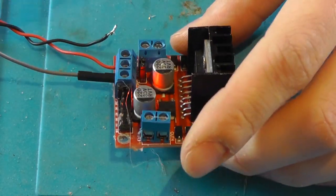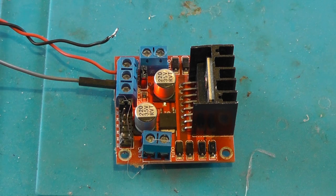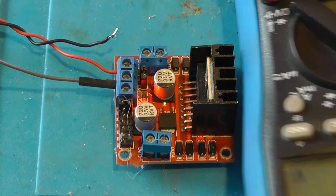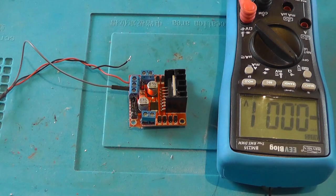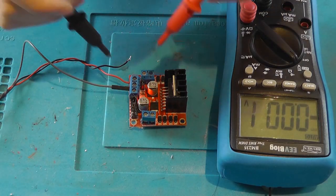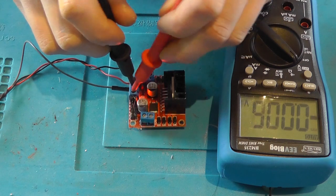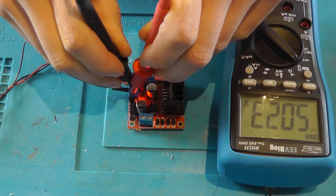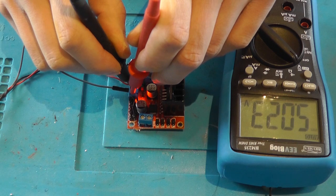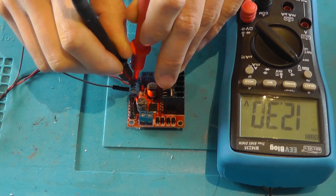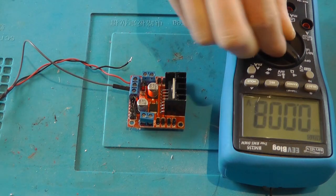We've got a 5 volt LED, and if we take the multimeter and probe the 5 volts, yeah, we get 5 volts. So that's good. Nice and steady.